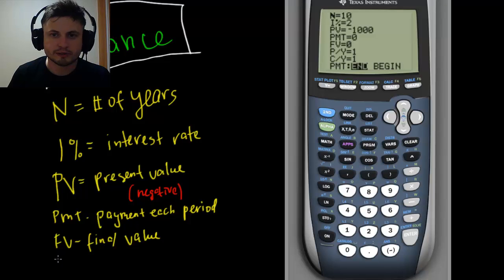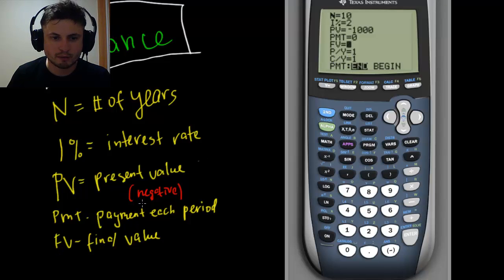The other thing you want to know is this next value P divided by Y. P divided by Y represents payments per year. This is when you may have more than one payment per year.